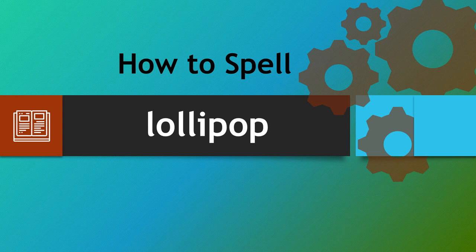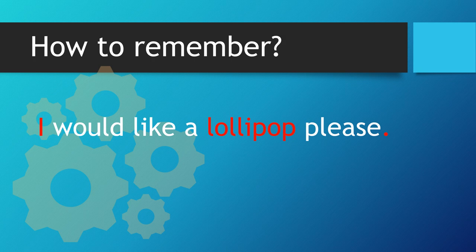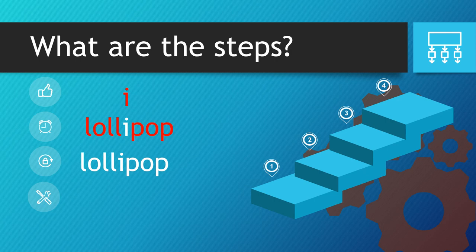I would like a lollipop please. This is a very straightforward step, but by saying I would like a lollipop please, it just tells us we need an i within the word, not a y.